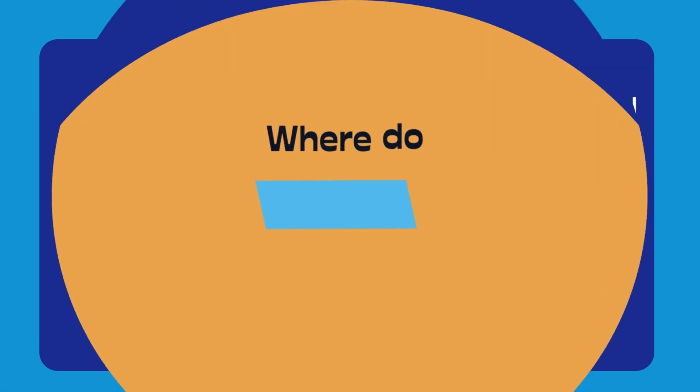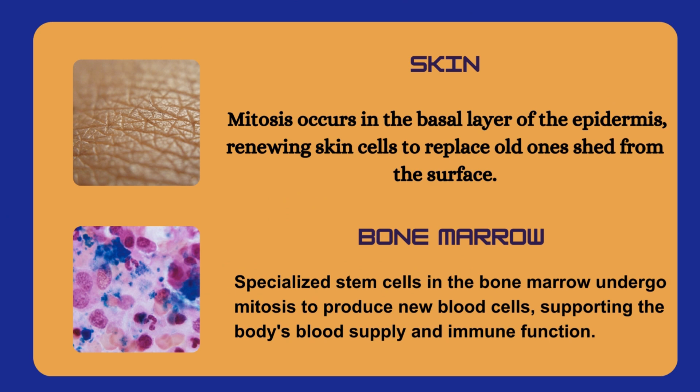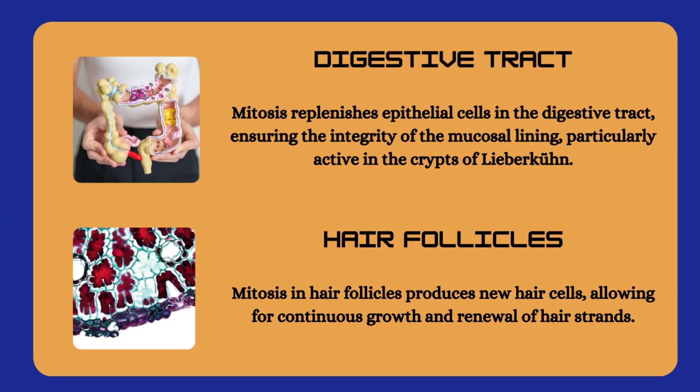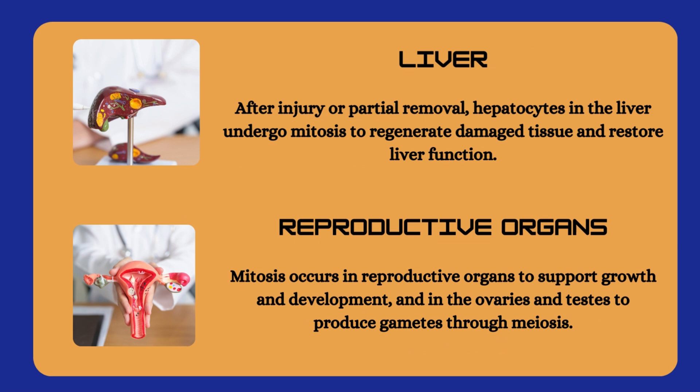Where does mitosis occur in our body? Skin, bone marrow, digestive tract, hair follicle, bone growth, immune system, liver, and reproductive organs.